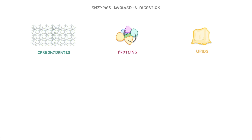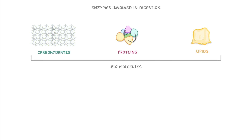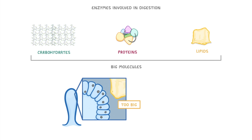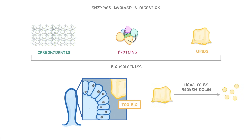So the first question really is why do we need to do this? Why do we need to break everything down? Basically, the carbohydrates, proteins, and lipids that we eat in our diet are normally pretty big molecules, and so they're way too big for us to absorb into our bloodstream, across the villi of our small intestine. Instead, they have to be broken down first into much smaller pieces, and for that we need enzymes, which are special proteins that can speed up the rate of chemical reactions.